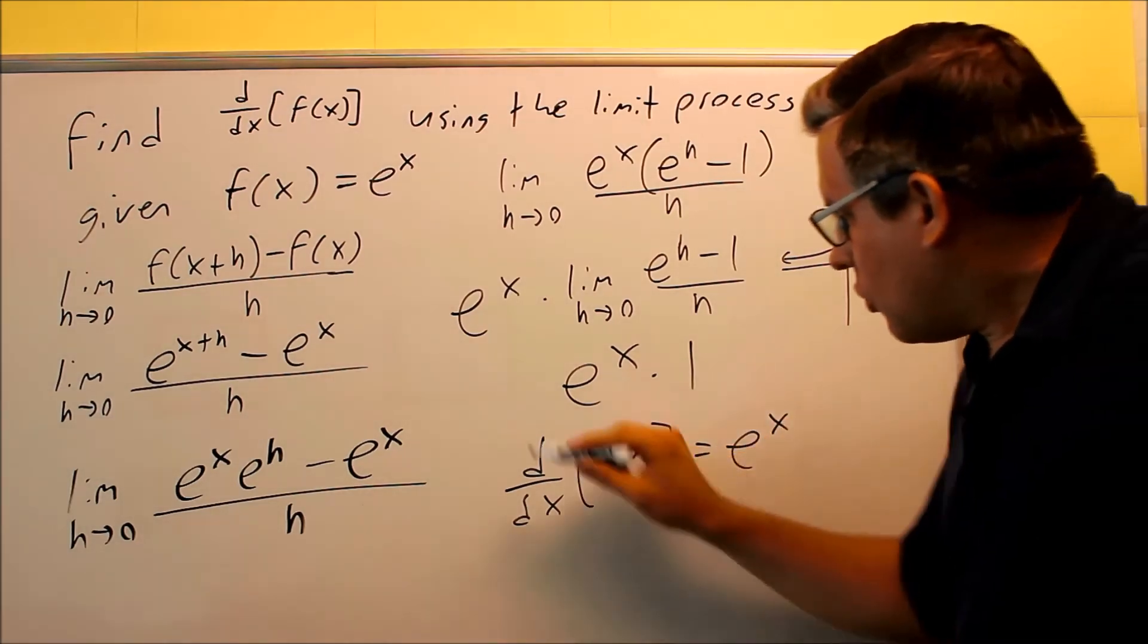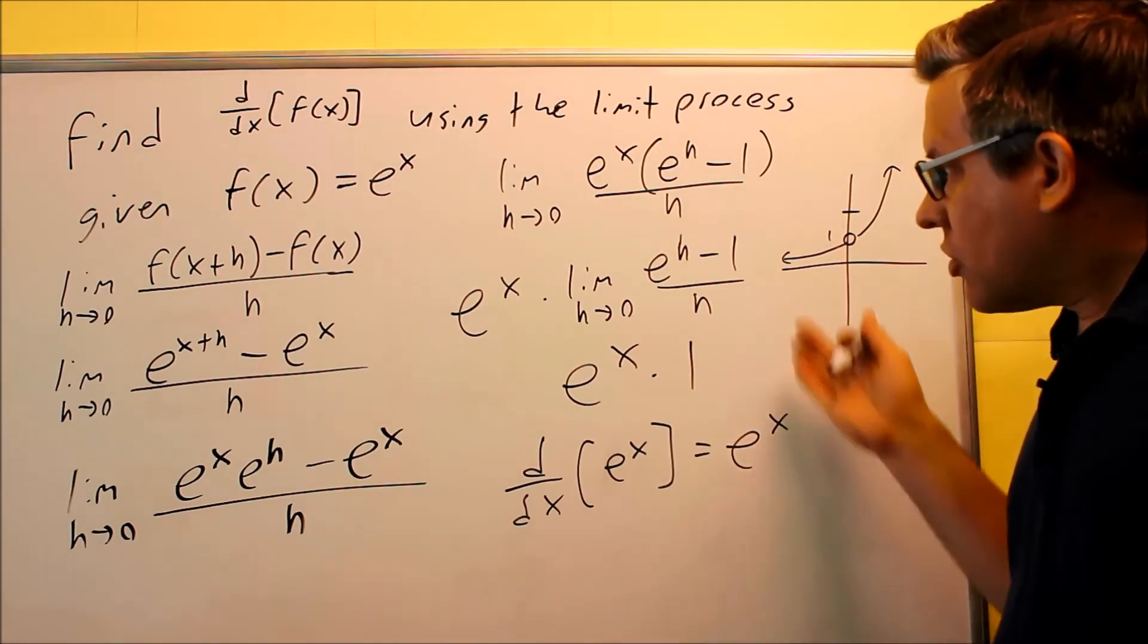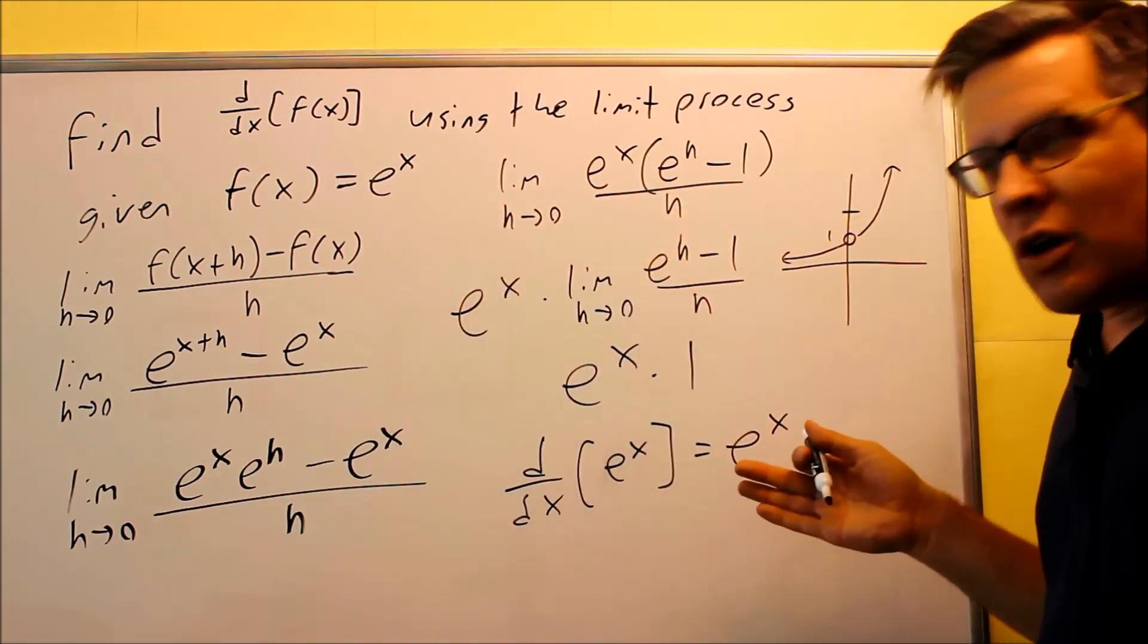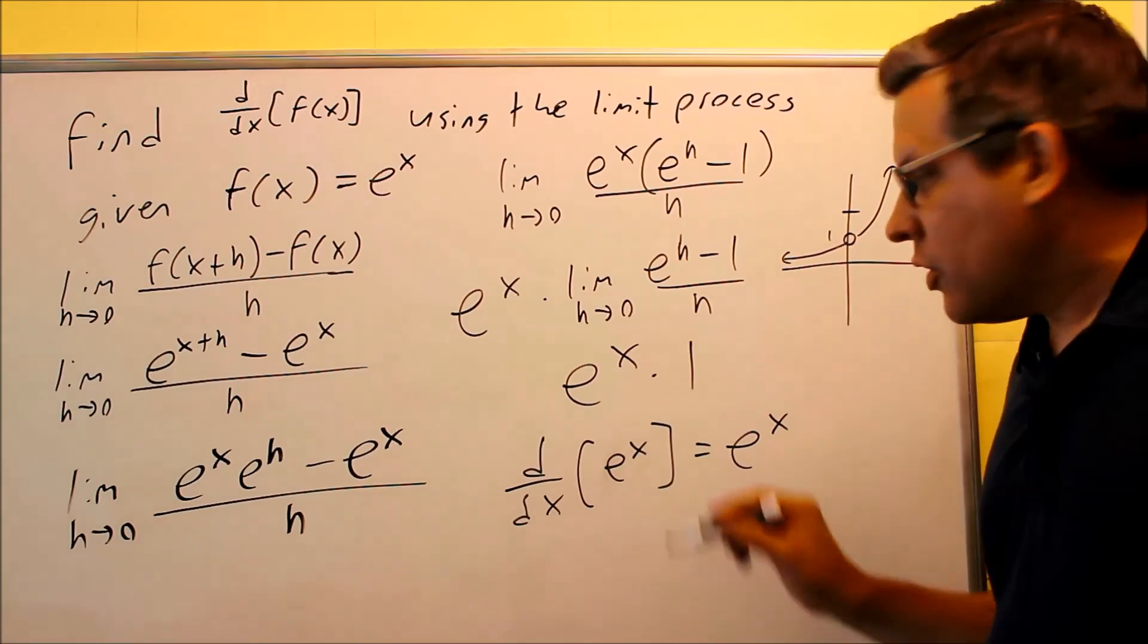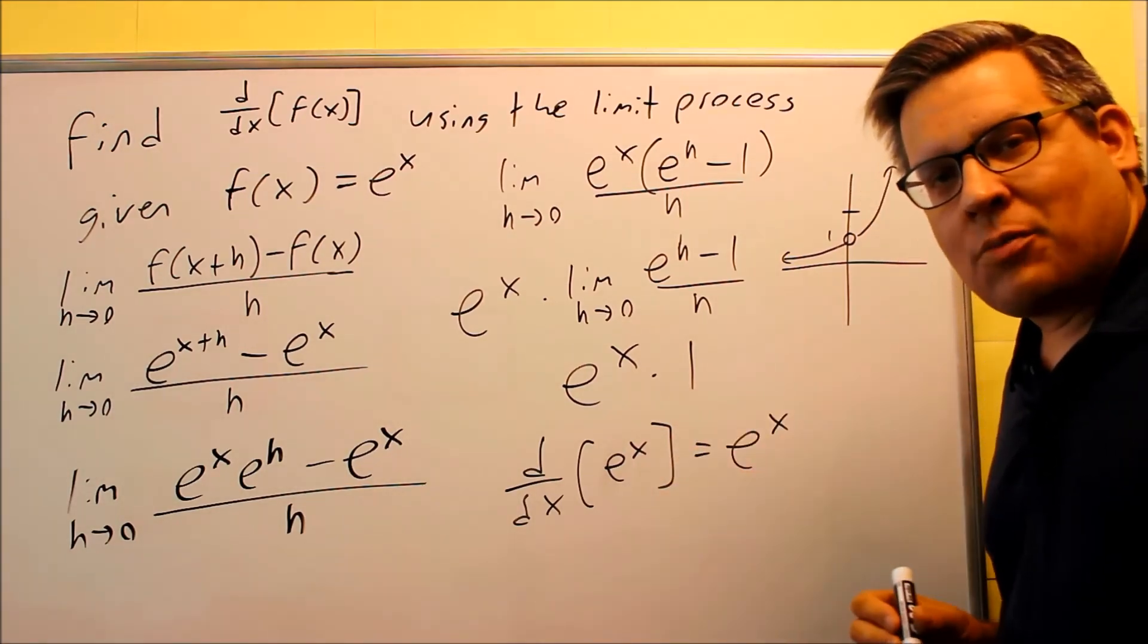This is one of the only functions that actually does that. So now, since we've gone through the limit process and we've done all that, we've shown that the derivative of e to the x is e to the x. So now we can just apply that now when we do our other examples.